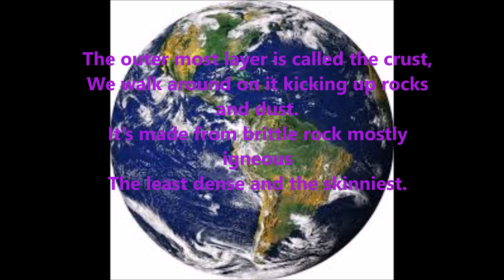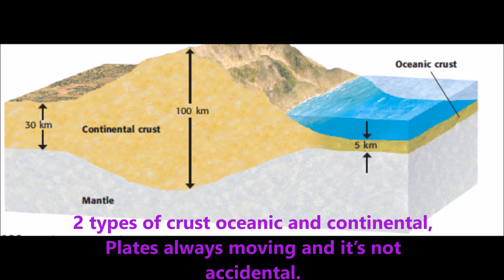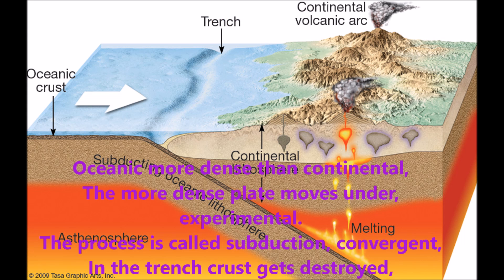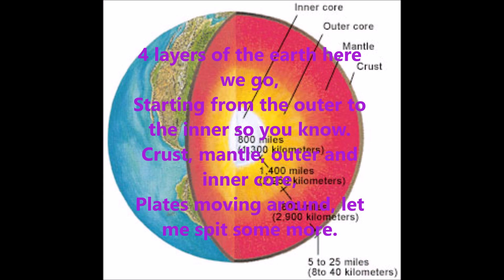The outermost layer is called the crust — we walk around on it, kicking rocks and dust. It's made from brittle rocks, mostly igneous, the least dense and the skinniest. Two types of crust: oceanic and continental. Plates always moving around, it's not accidental. Heat rises, cold sinks — that's convection, just like with air and fluids, there's a connection. Oceanic is more dense than continental; the more dense plates move under — the process is called subduction. Convergent in the trench, crust gets destroyed.